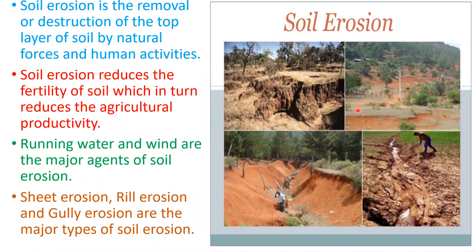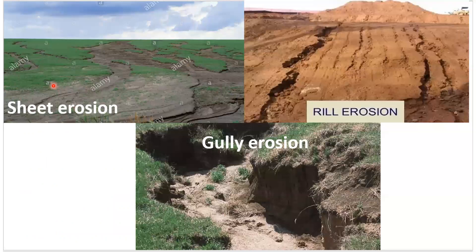Soil erosion is the removal of the topsoil, and it affects the fertility of the soil. Soil erosion is the removal or destruction of the top layer of soil by natural forces and human activities. Running water and wind are the major agents of soil erosion, and sometimes human activities are also a major cause. The major types of soil erosion are sheet erosion, rill erosion and gully erosion.